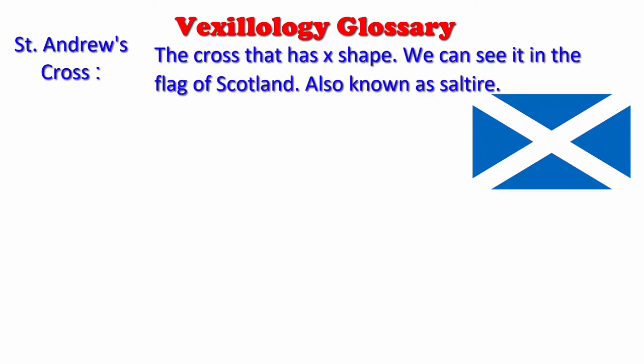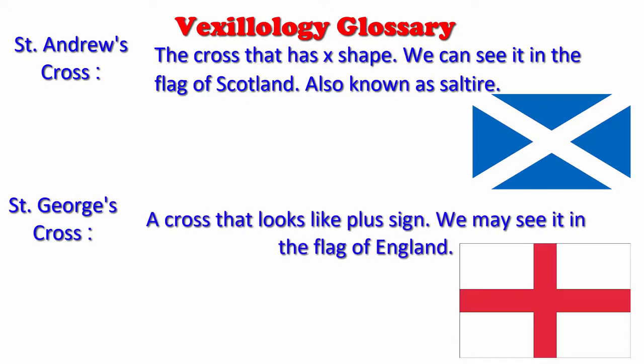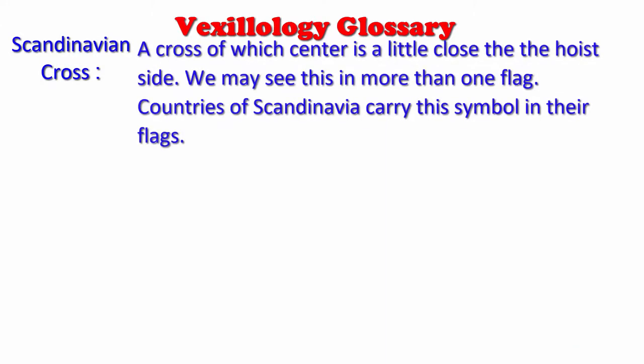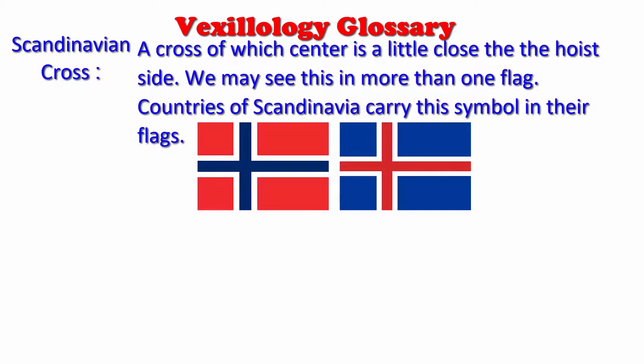St. Andrew's Cross can be seen in the flag of Scotland, also known as Saltire. St. George's Cross: a cross that looks like a plus sign, which we may see in the flag of England. Scandinavian Cross: a cross of which the center is a little close to the hoist side. We may see it in more than one flag — countries of Scandinavia carry this symbol in their flags.